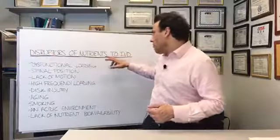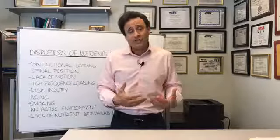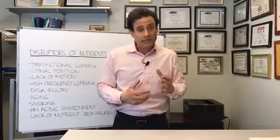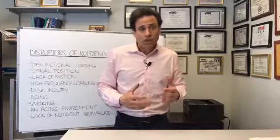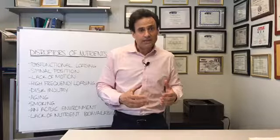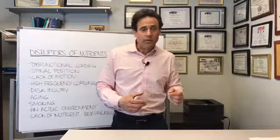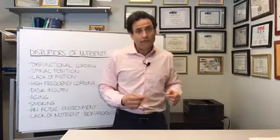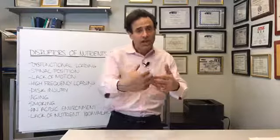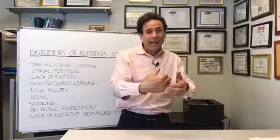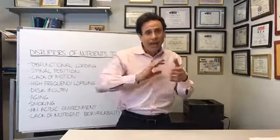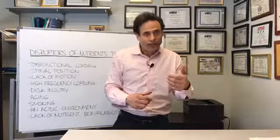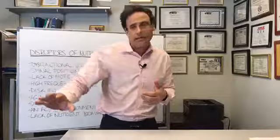Number one: the disruptors of nutrients. We all need nutrients to go to bones, ligaments, tendons, and our disc. Our disc is made out of fibrocartilage. The problem with the disc is that it's avascular, meaning it doesn't have ample blood flow. Without ample blood flow, it doesn't have the ability to carry nutrients in and get toxins out. So it lacks nutrient ingression and toxic egression.